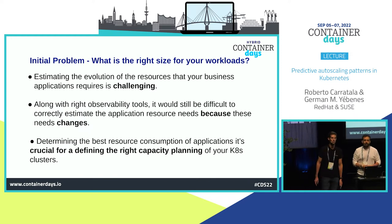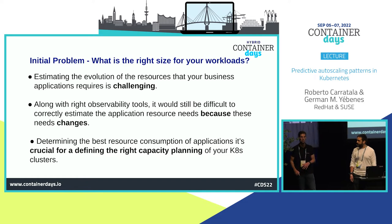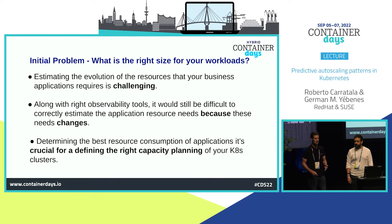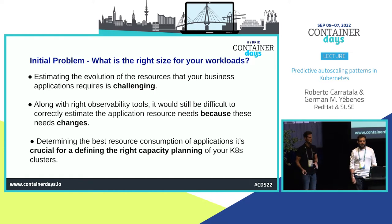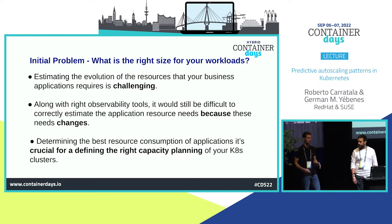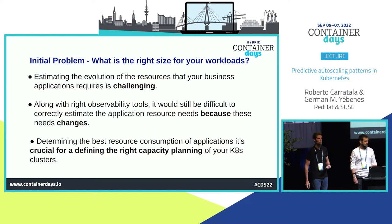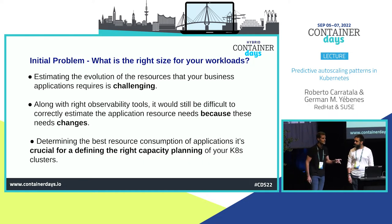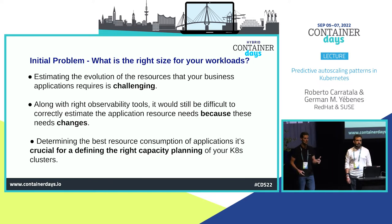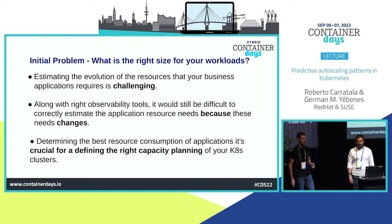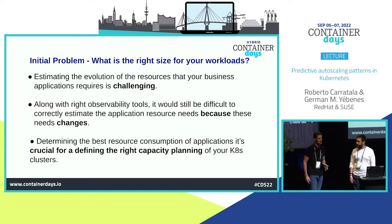Let's start discussing our initial problem. Imagine you have your application and you want to deploy it into your different Kubernetes clusters in production. What's the right size for your different workloads? Determining the proper size of your workloads is challenging because they are not static. These applications will evolve and not consume the exact same amount of CPU and memory even after one year. Even with good observability tools like Prometheus, it's still difficult to correctly estimate application resources because they evolve and change.